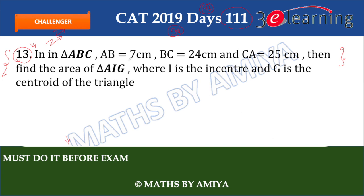When you read the question, you will analyze that this is a right-angled triangle. So it involves the concept of a right-angled triangle which has an incenter, a centroid, and the area of the triangle. So it covers: right-angled triangle, incenter, centroid, and area of the triangle. I will explain all the concepts.